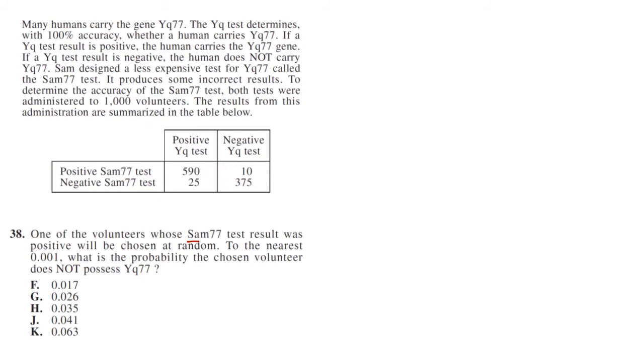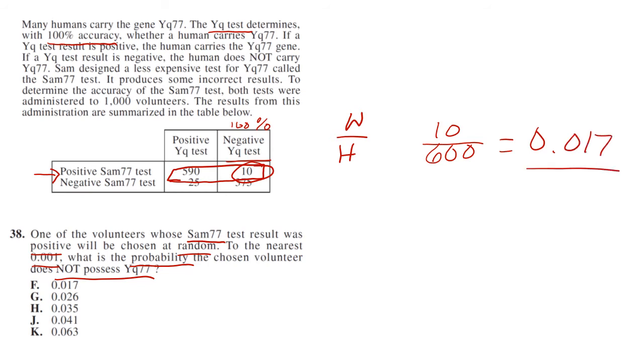One of the volunteers whose Sam77 test result was positive will be chosen at random. What is the probability the chosen volunteer does not possess YQ77? This is a reading question again. You have to know that the YQ test determines with 100% accuracy. So we're looking at these 600 individuals that were given the Sam77 positive result. 10 of them were actually negative because the YQ test is 100% accurate. So 10 out of 600. 10 divided by 600 equals 0.017, so your answer is F.